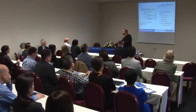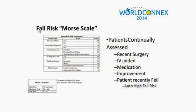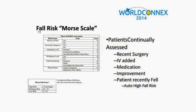Fall risk doesn't just appear magically in the ADT. We use the Morse Fall Risk Scale — a simple questionnaire asking pertinent questions that grades the patient's risk. If it falls under a certain threshold, that fall risk is entered into the ADT. Patients need to be continually reassessed — coming out of surgery or having a newly added IV can bump them up on the scale. If a patient falls anywhere, even in the hallway, that's an automatic high fall risk, bypassing the grading system.